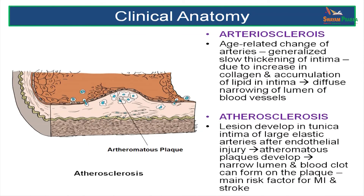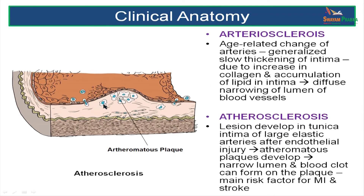Now for the clinically applied aspects: atherosclerosis is a process where fatty cells change and accumulate in the intima of a blood vessel, forming an atheromatous plaque — a raised portion of the tunica intima. A heart attack occurs when the blood supply to portions of the heart is stopped by narrowing of the lumen of the coronary arteries by an atheromatous plaque. Another arterial disease is arteriosclerosis, where there is generalized thickening of the arterial wall, narrowing the lumen and reducing blood flow.